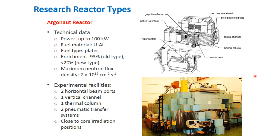The Argonaut reactor has the following technical data: power up to 100 kW, fuel is uranium-aluminum, and enrichment is 93% for the old type and less than 23% for the new type. Experimental facilities include two horizontal beam ports, one vertical channel, one thermal column, a full pneumatic transfer system, and close-to-core radiation positions.